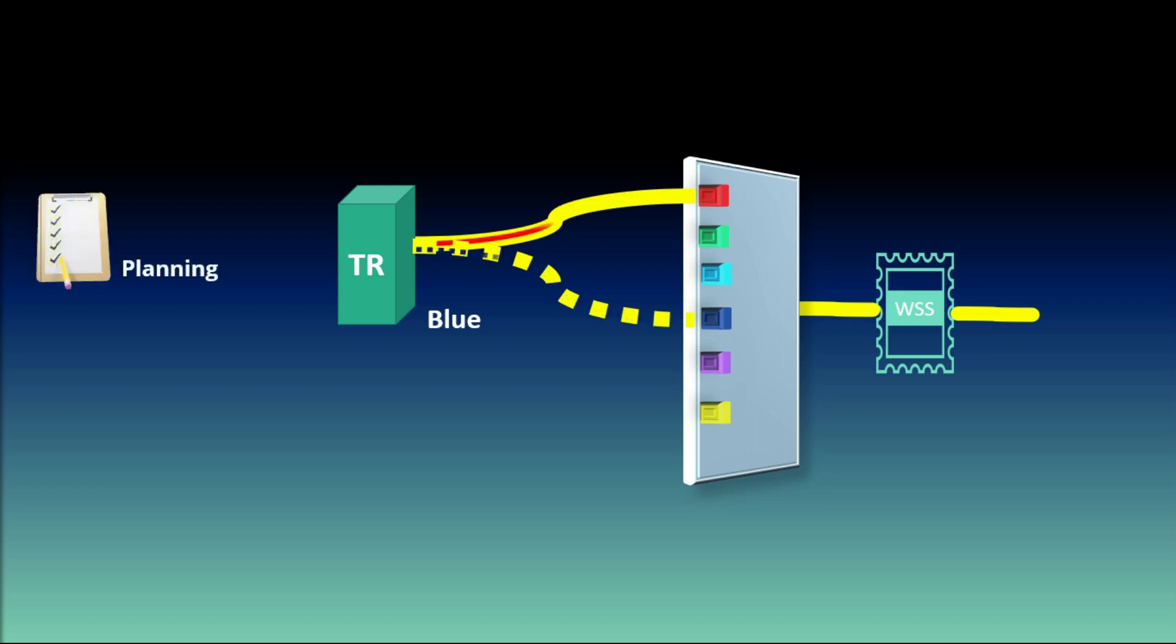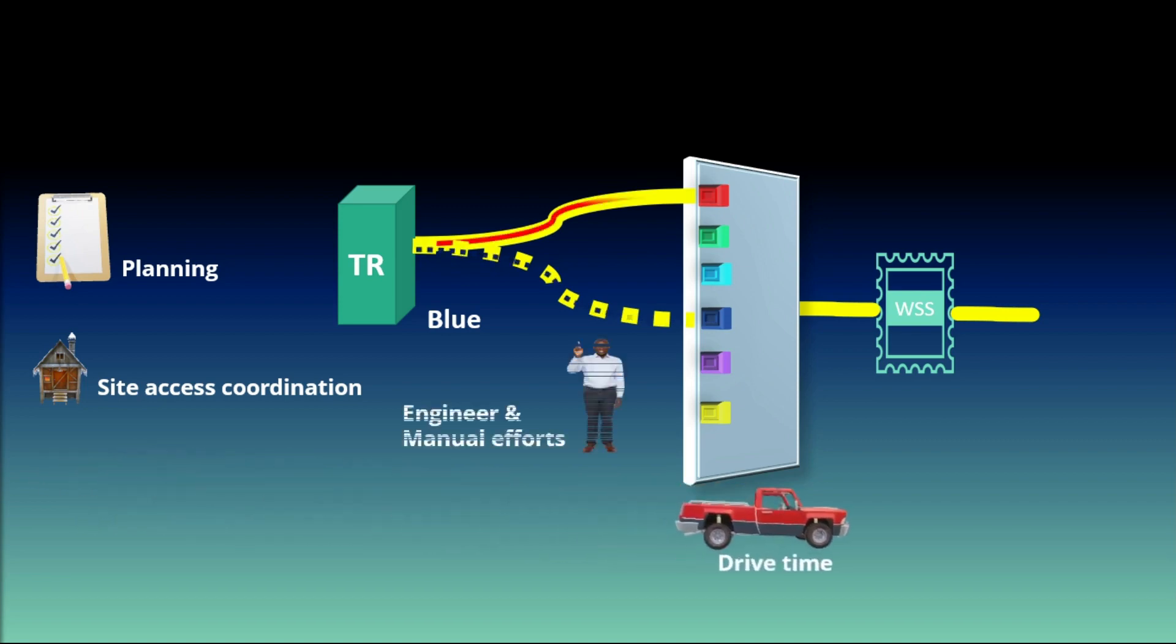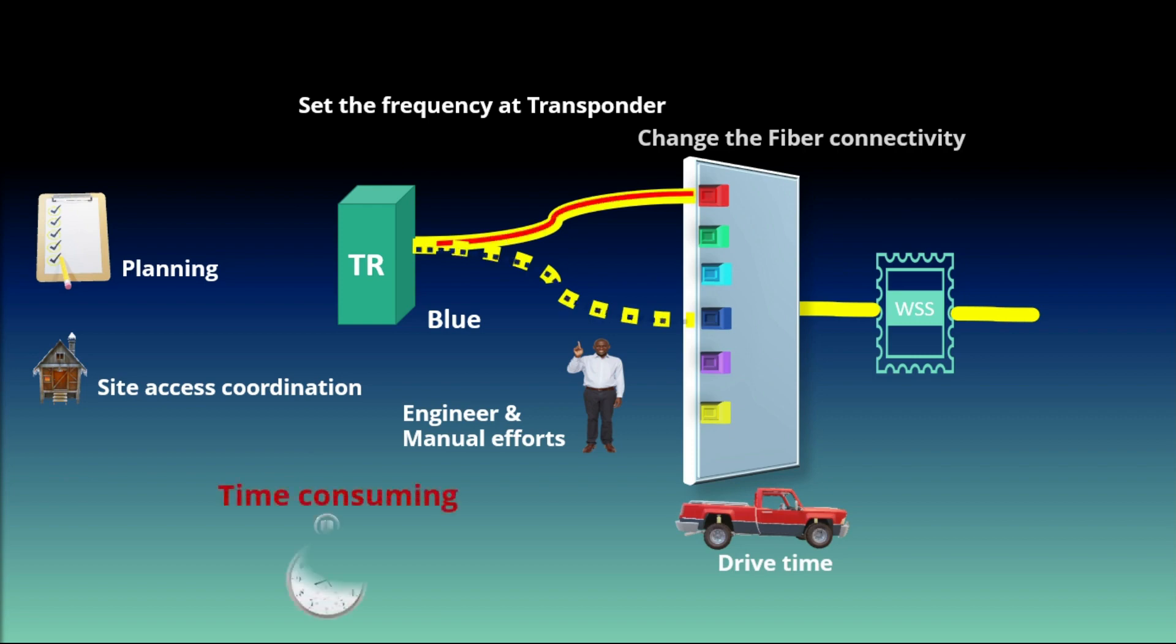For that need proper planning, site access coordination, as well as drive time to visit two sites. Both ends of the circuit need engineer to set the transponder frequency and change the fiber connectivity. This was time consuming and operation cost involved.